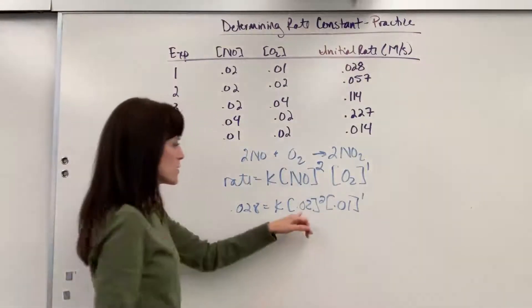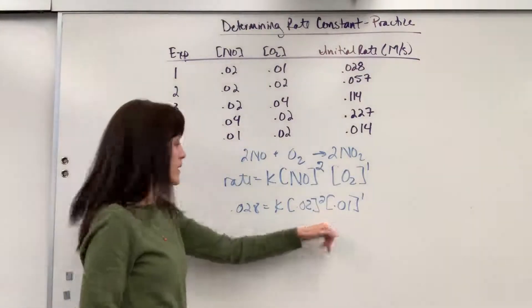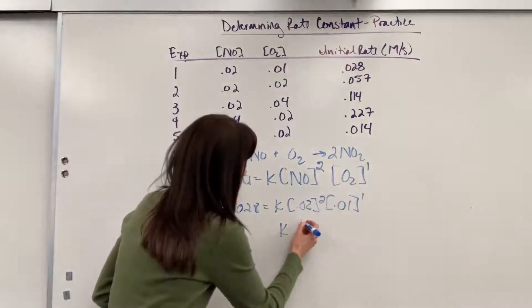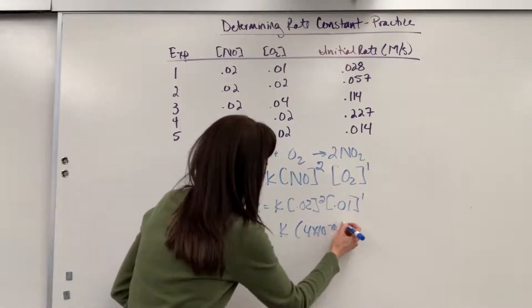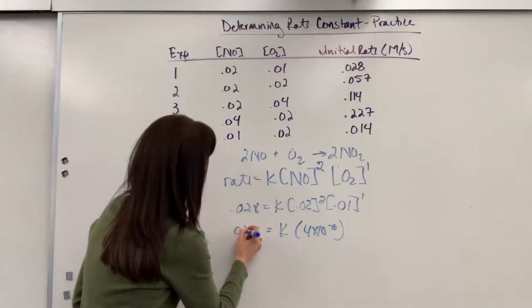When we multiply all of this, so 0.02 squared times 0.01, we're going to get K times 4 times 10 to the minus 6 equals 0.028.